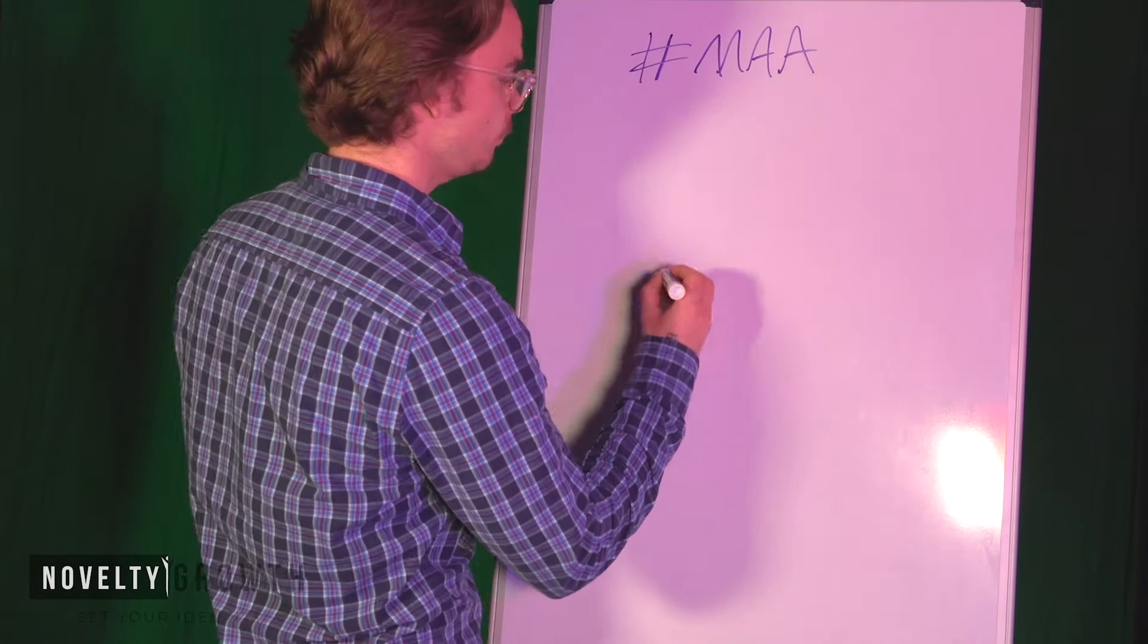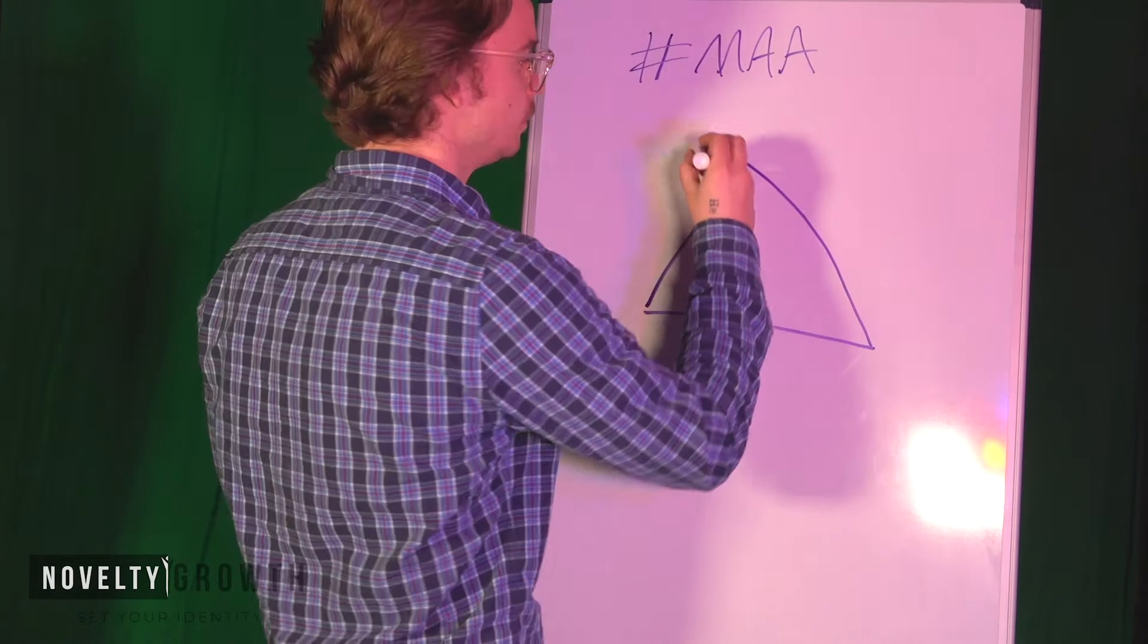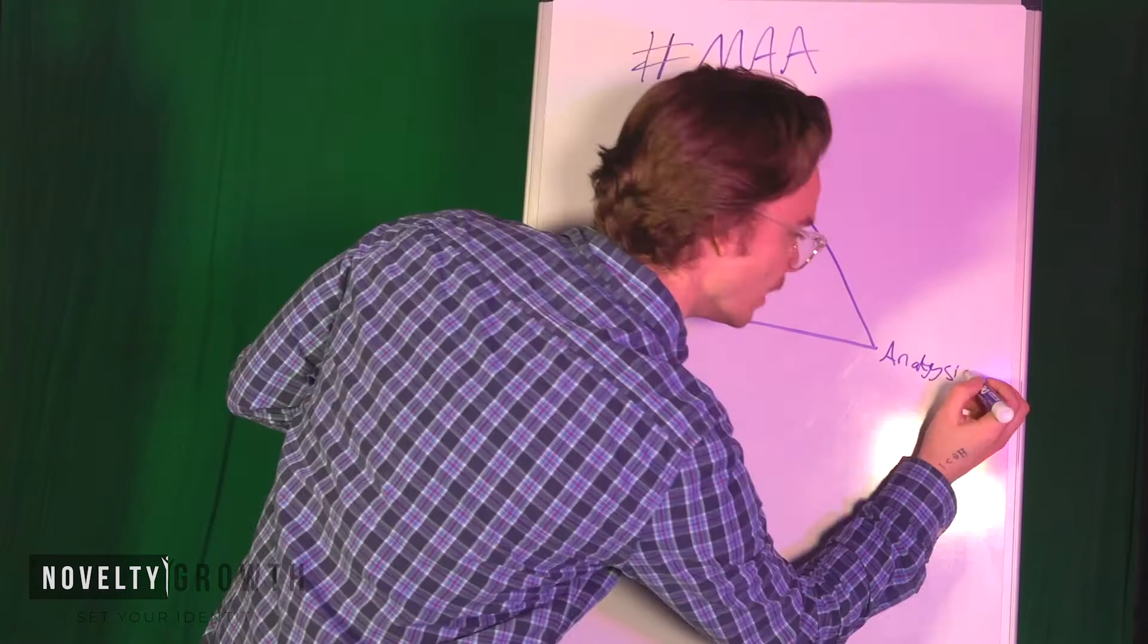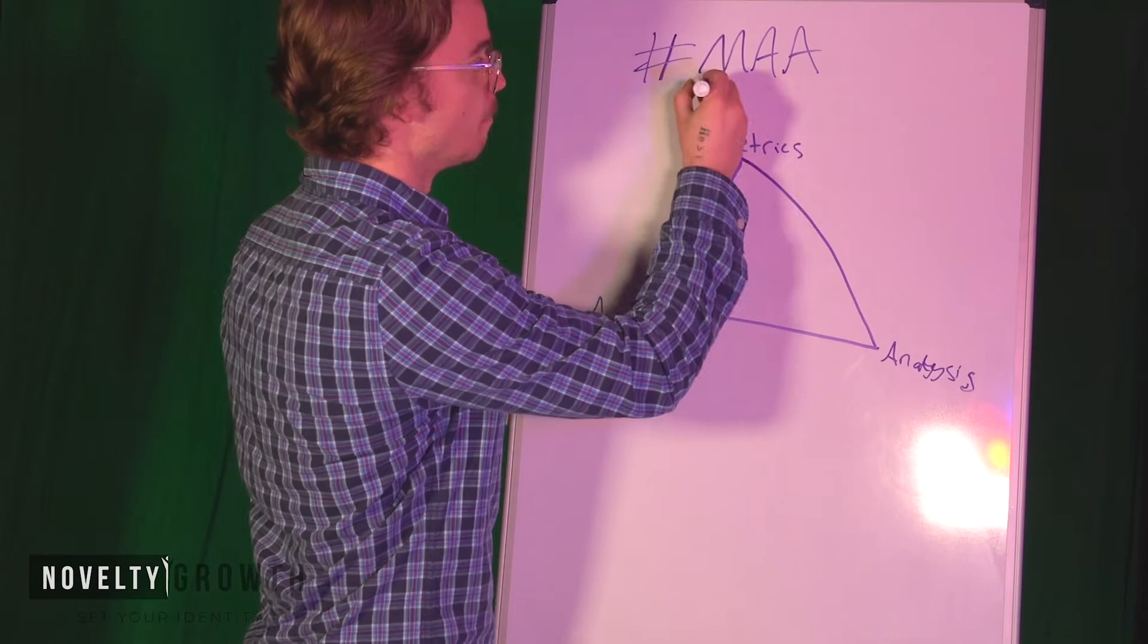So we start out here with this triangle, we have metrics at the top, we have analysis over here, then we have action over here. So we have metrics, analysis, action.